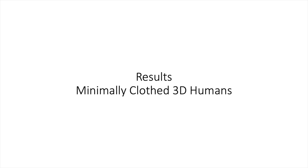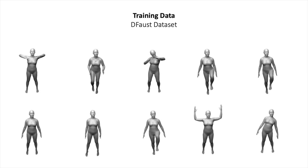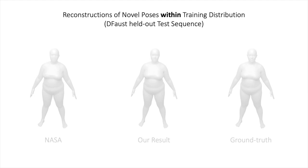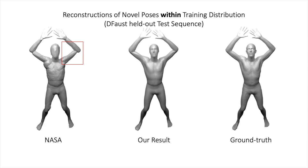We now show results on minimally clothed 3D humans. We use 9 out of 10 sequences from the default dataset for training and evaluate on the remaining one. We first compare the results of our method to the results of NASA on unseen poses from the training distribution. While both methods are able to reconstruct the overall shape well, NASA struggles at joints as it doesn't learn skinning weights. In contrast, our method is able to reconstruct the entire shape well.